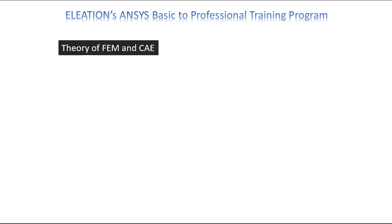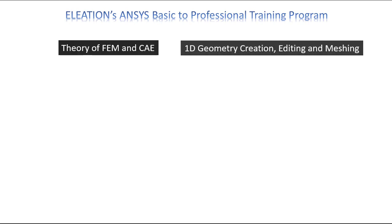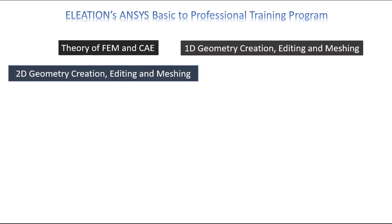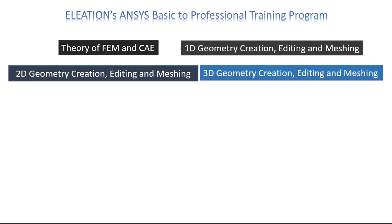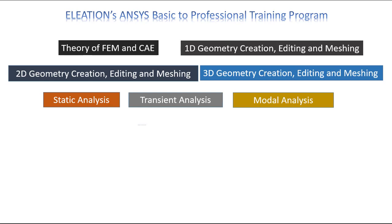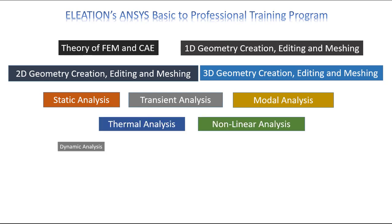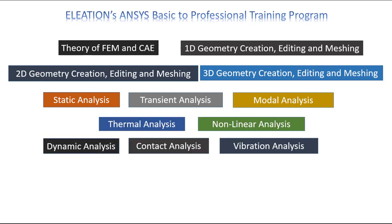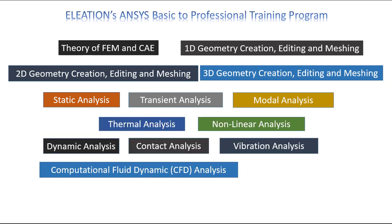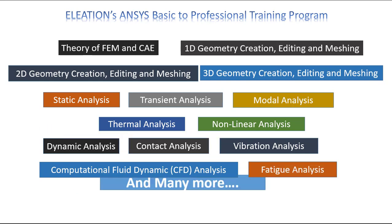Now we will discuss the course content of Eleation's ANSYS Basic to Professional Training Program, which includes: theory of FEM and CAE, 1D geometry creation, editing and meshing, 2D geometry creation, editing and meshing, 3D geometry creation, editing and meshing, static analysis, transient, modal, thermal, non-linear, dynamic, contact, vibration, CFD, optimization, fatigue, and many more.